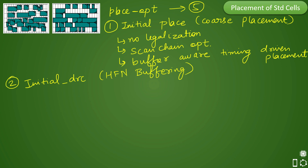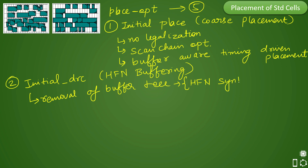For other high fan-out nets, the tool will do HFN buffering in the initial DRC stage. It first removes the existing buffer tree, then performs high fan-out net synthesis. Nets with a fan-out of more than 100 are considered high fan-out nets. You can specify this threshold in the constraints file using the max_fanout constraint.